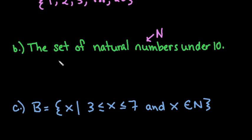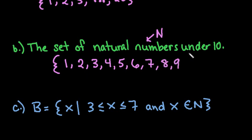So for the set of natural numbers under 10, we would write our brackets and start with 1, 2, 3. Because this only goes up to 9, we could write it all the way out: {1, 2, 3, 4, 5, 6, 7, 8, 9}. Because it says under, that means it does not include 10, so we stop there.